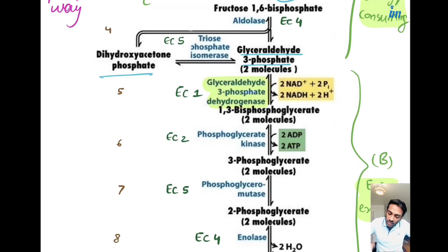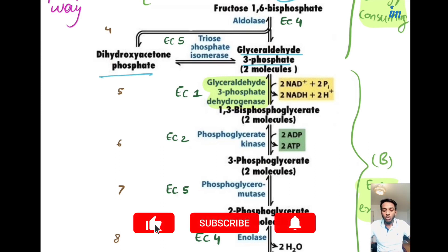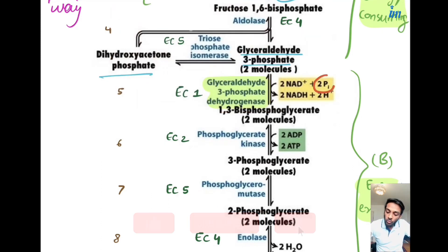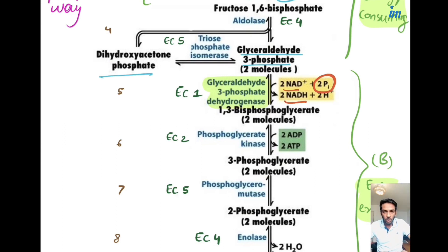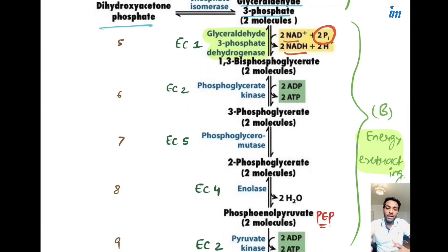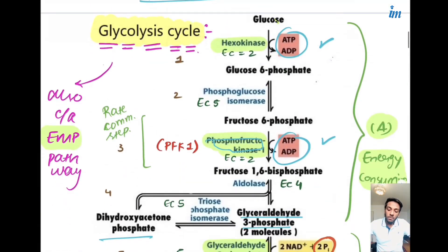The next important step is where glyceraldehyde-3-phosphate dehydrogenase is the enzyme, and 2 NAD⁺ is converted to 2 NADH. For USMLE, you should know how this inorganic phosphate was involved, how NAD was responsible, and how NAD can maintain the phosphate balance in the cell. Now it is the energy extracting phase — you have built your phone and now it's time to sell and earn profit.